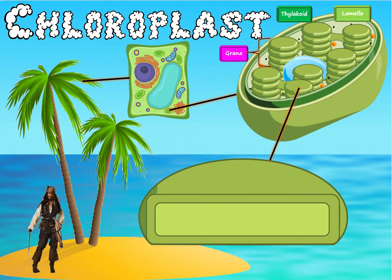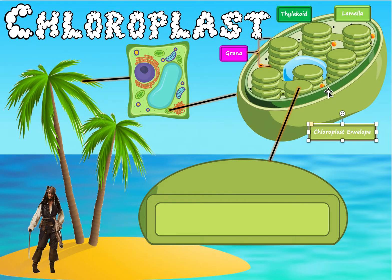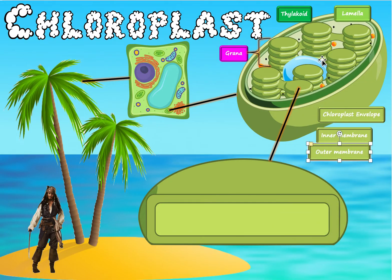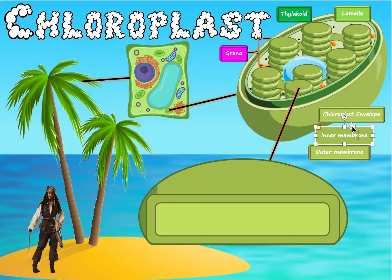Now let's look at the two outer membranes of the chloroplast. Combined, these two membranes are called the chloroplast envelope — just like a letter envelope holds a letter, the chloroplast envelope holds everything inside. The individual layers are simply called the inner membrane and the outer membrane, and together they comprise the chloroplast envelope.